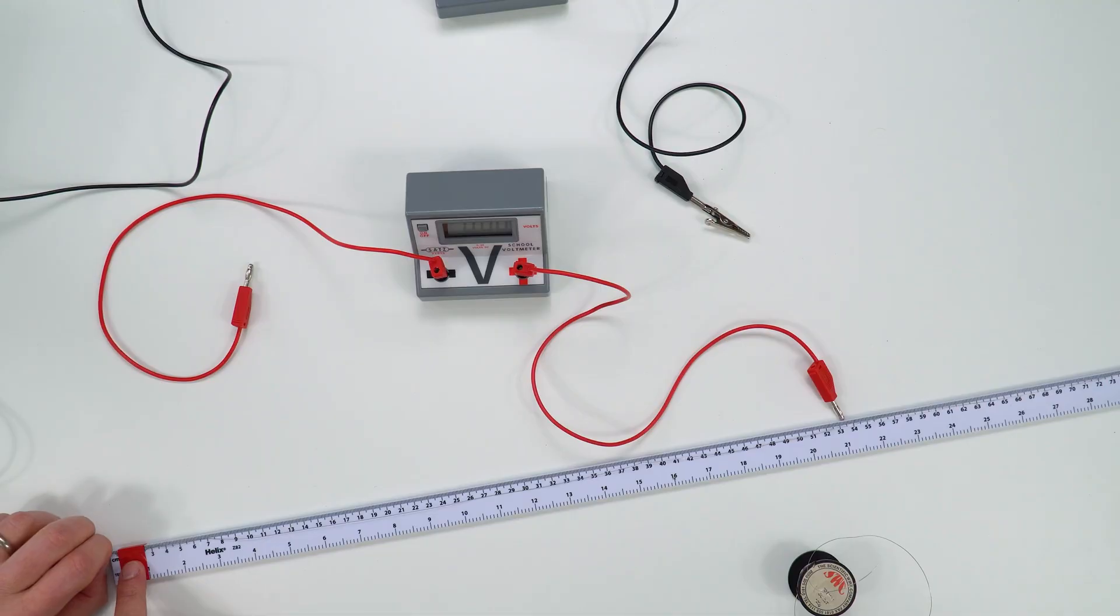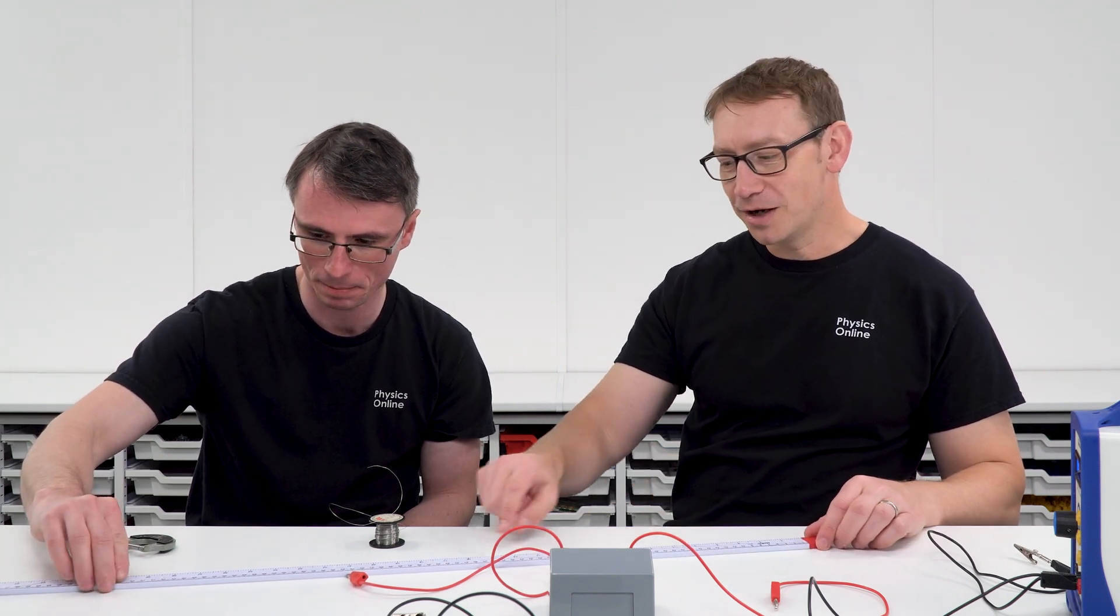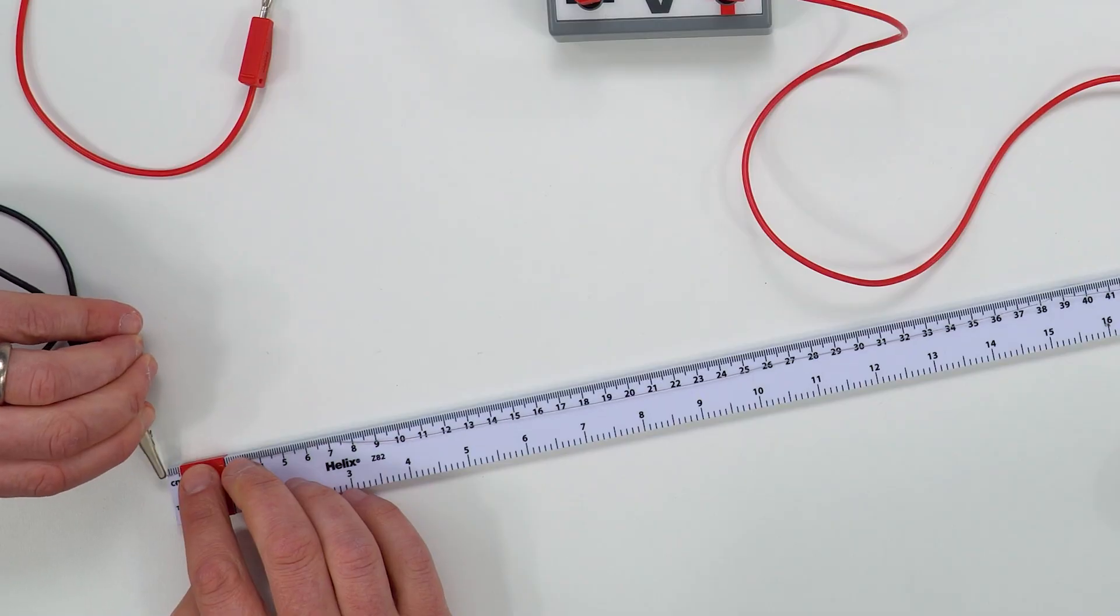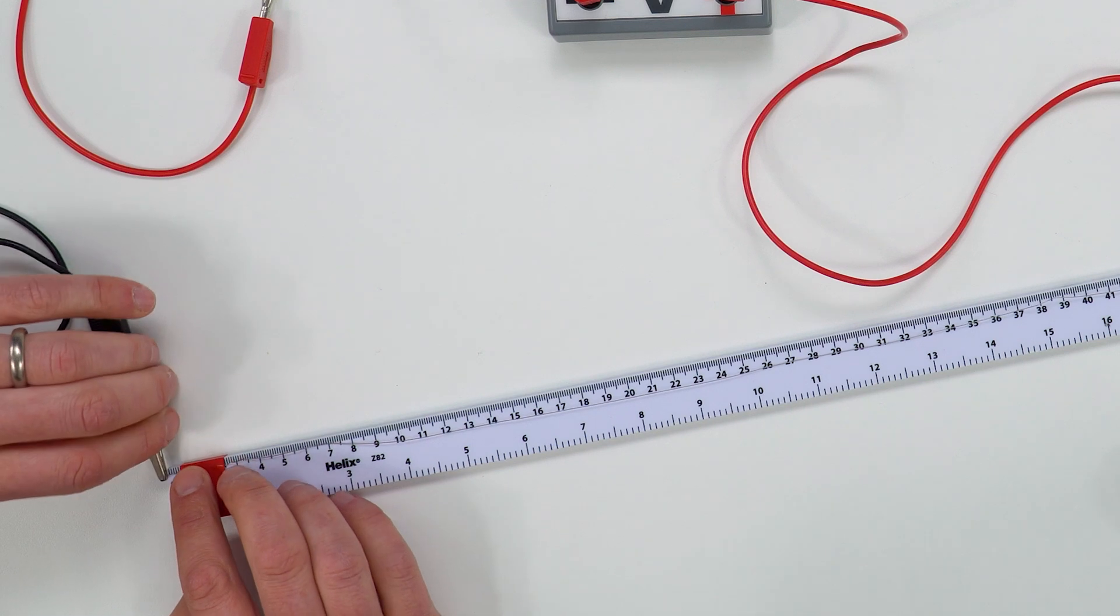Okay so the setup I have here is probably one of the most simple circuits for an A-level practical. What we have is a piece of this wire that I've stretched out onto the meter ruler. This is the hardest thing because it's very hard to get the wire completely straight without any kinks in it.